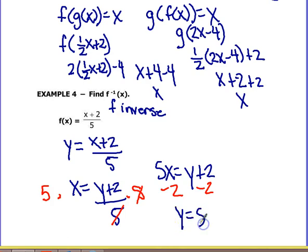And we would get y equals 5x minus 2. And that would be the inverse in y equals form. But we are in function notation. So we need to switch that y back into the f inverse form. So we would conclude that f inverse of x is equal to 5x minus 2.